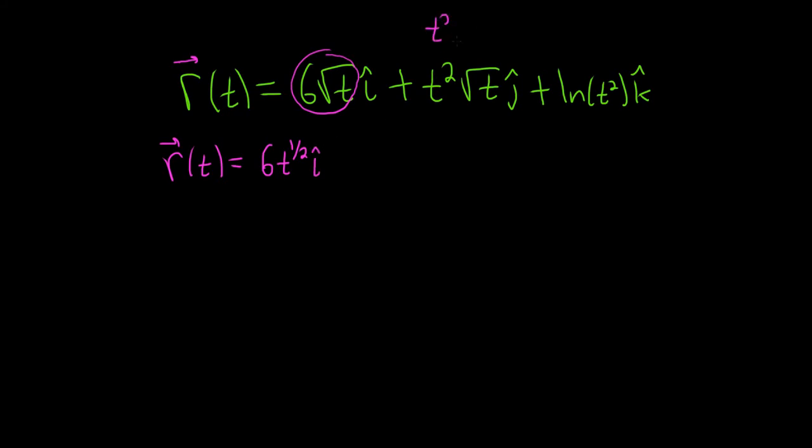Likewise, here we have t squared times t to the 1/2. So when we multiply these, we add the exponents. If we think of 2 as 4/2, we end up with 4/2 plus 1/2, which is 5/2. This is plus t to the 5/2 j-hat.